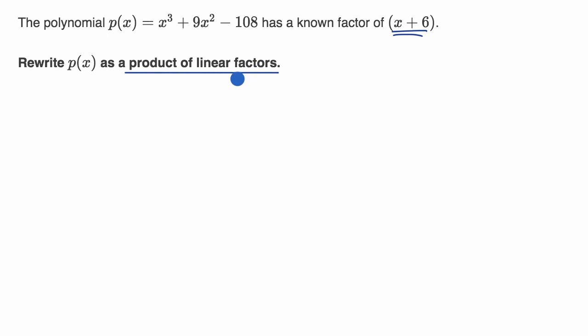All right, now let's work on this together. Because they give us one of the factors, what we can do is say, what happens if I divide x + 6 into p(x)? What do I have left over? It looks like I'm still going to have a quadratic, and then I'll probably have to factor that somehow to get a product of linear factors. So let's get going.